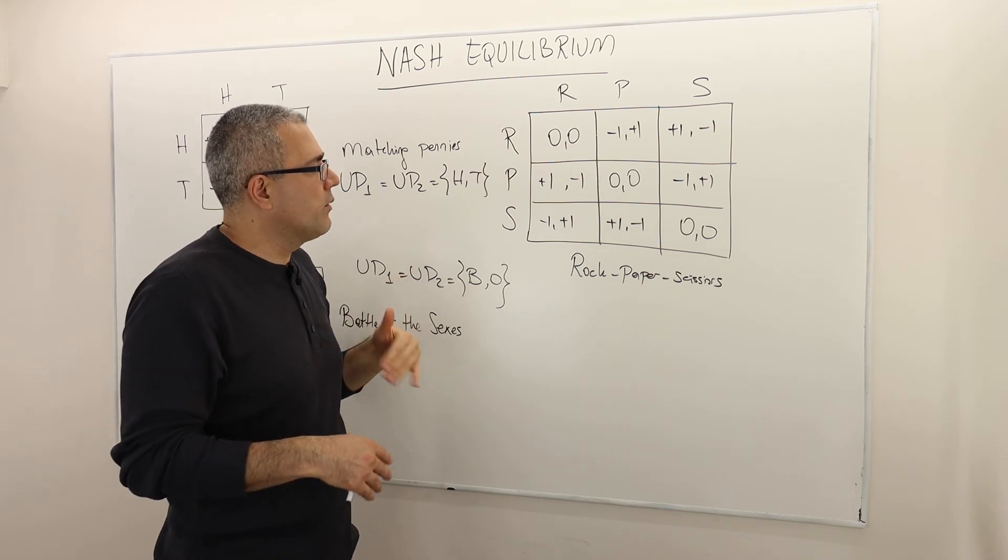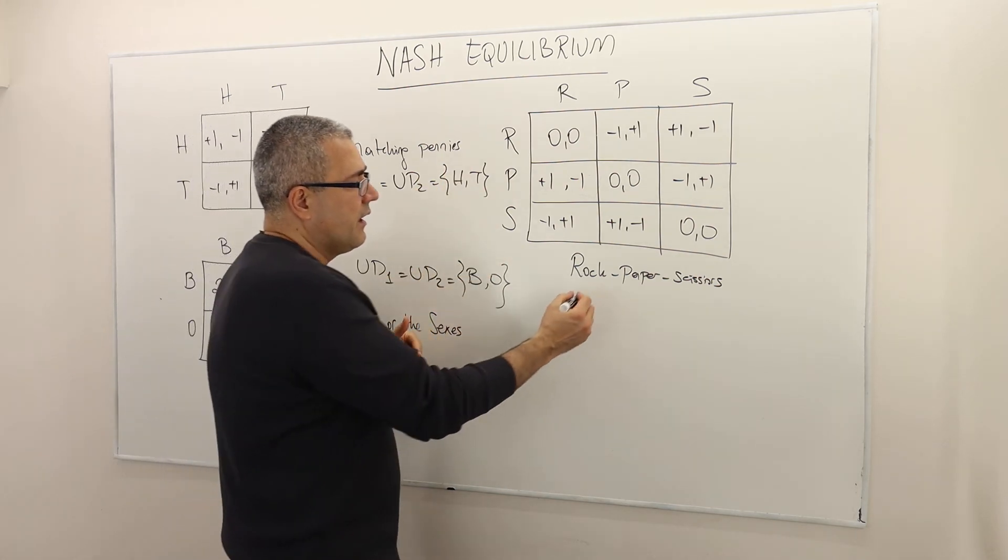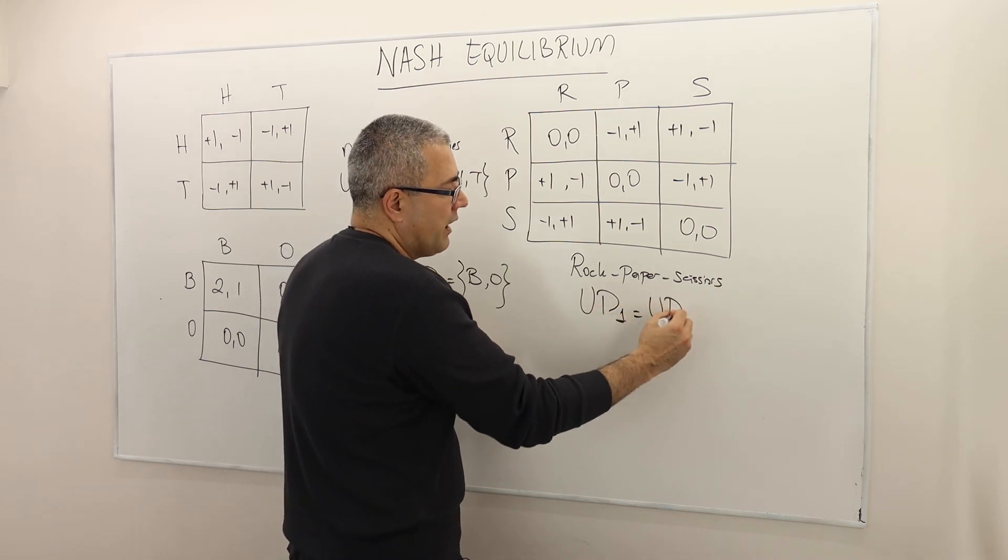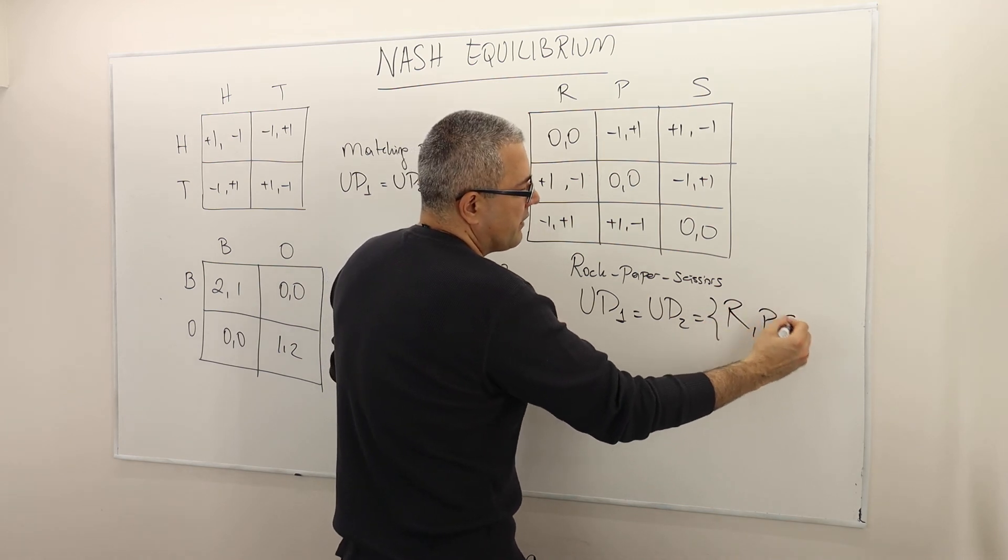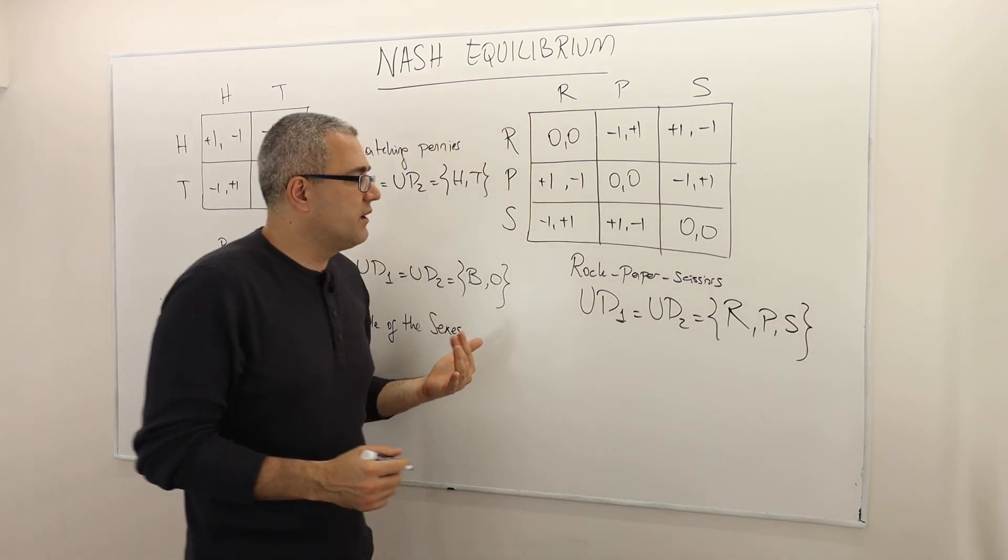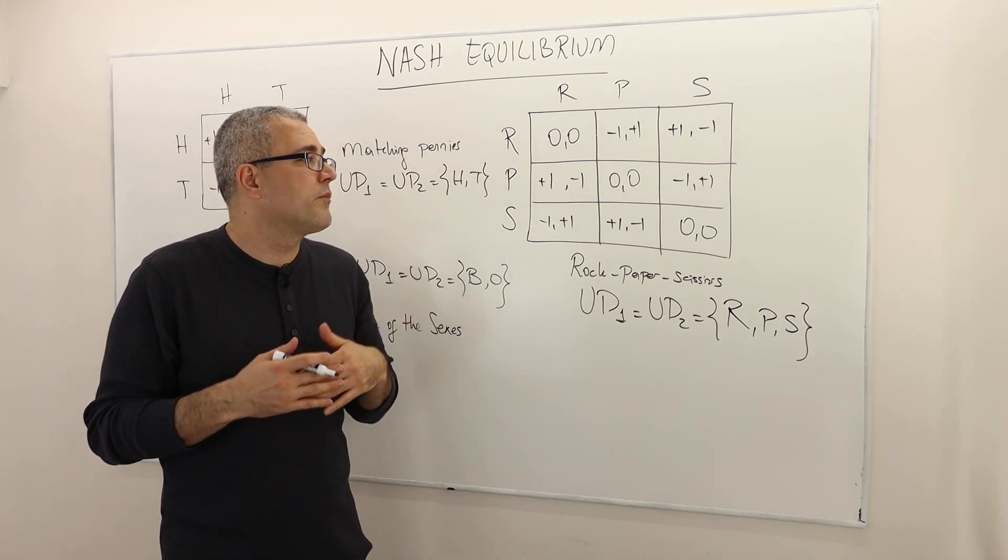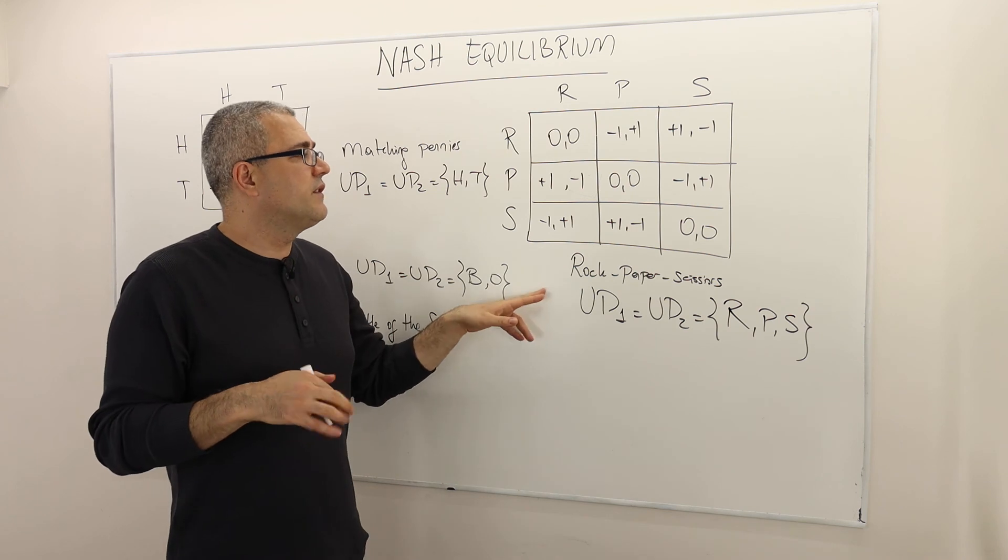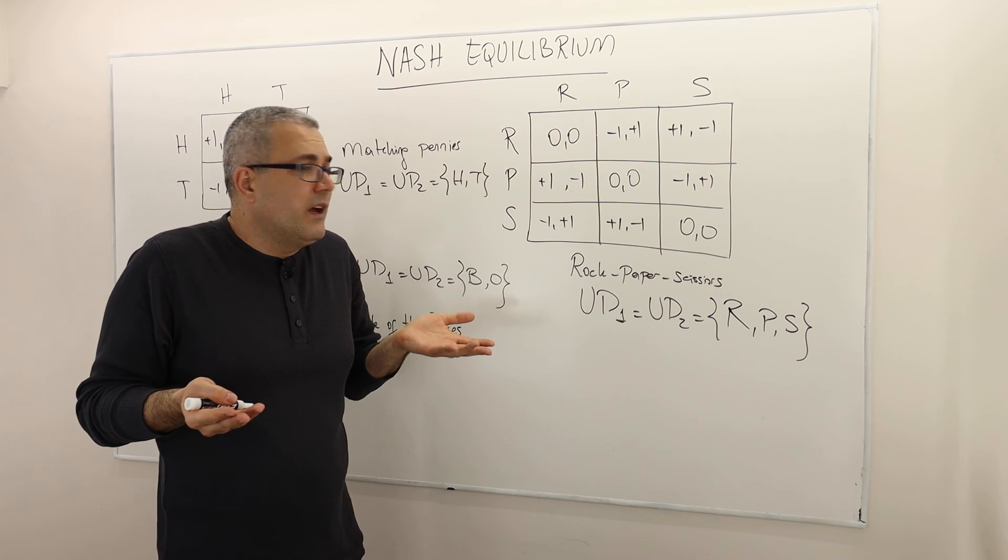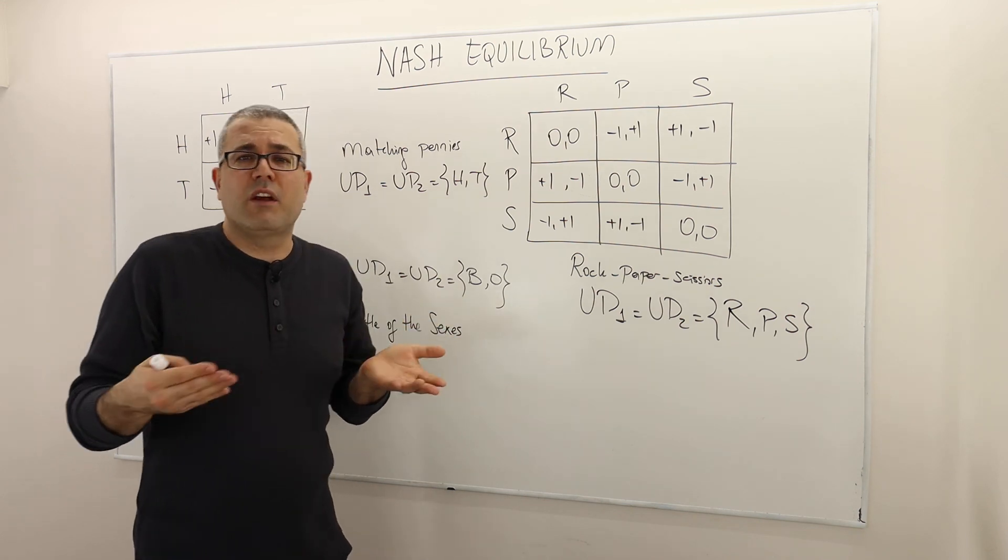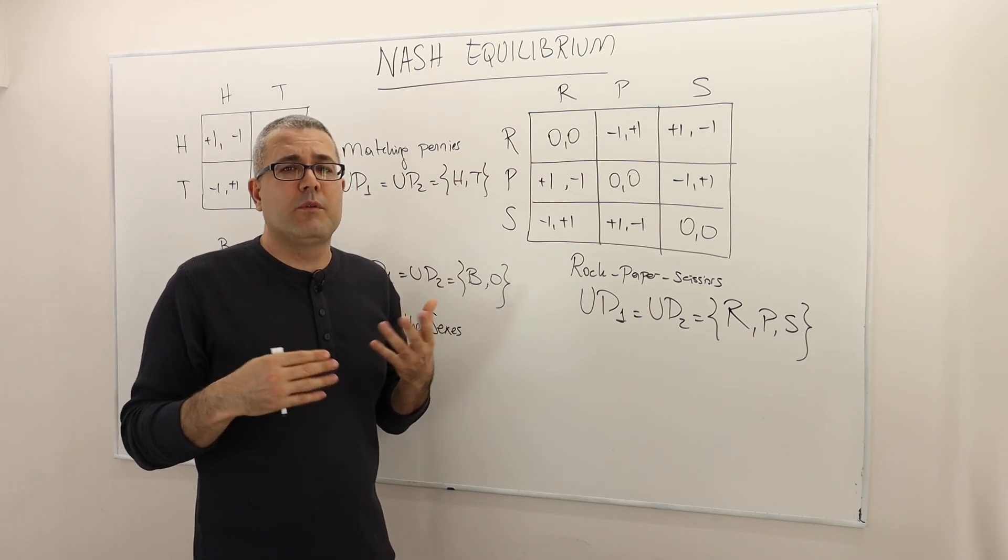So if this is the game, once again, if you look at it, the undominated strategies for player one and for player two is basically everything. The paper, the rock, paper and the scissors. All these three strategies are in fact undominated, meaning their best response to some belief. What does that mean? Once again, if somebody asks you, what is the optimal strategy in this game? Well, again, by using the idea of iterated elimination or, you know, rationalizability, you're not going to be able to say much.